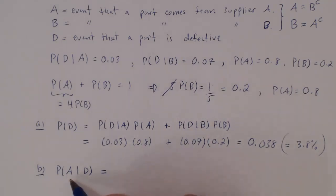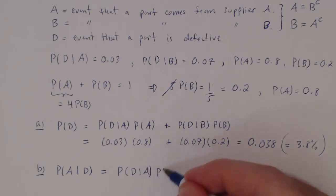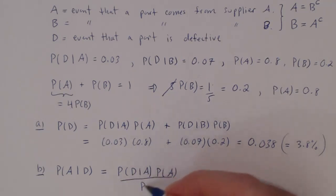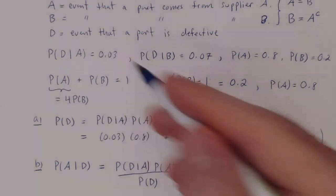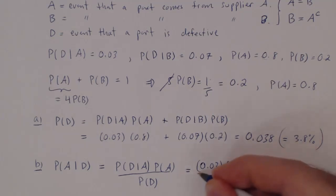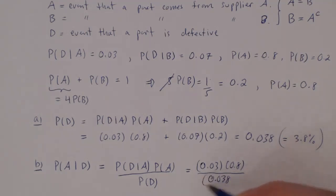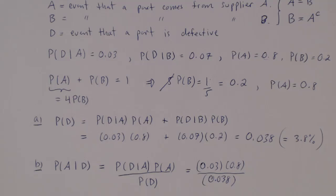Bayes' theorem says P(A|D) = P(D|A) · P(A) / P(D). We know all three quantities: P(D|A) = 0.03, P(A) = 0.8, and P(D) = 0.038, which we just found — not an accident. So we compute 0.03 × 0.8 / 0.038 ≈ 0.6316.